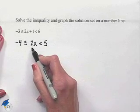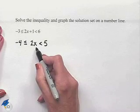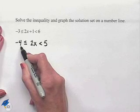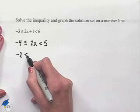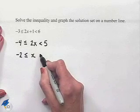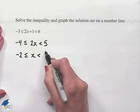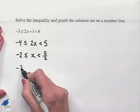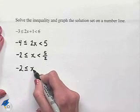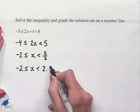Next we're going to divide by 2 in order to isolate x. Division by 2 on the left hand side leaves us with -2. Dividing by 2 in the middle part leaves us with x. Dividing by 2 on the right leaves us with 5 halves. We could also rewrite this as -2 ≤ x < 2.5.